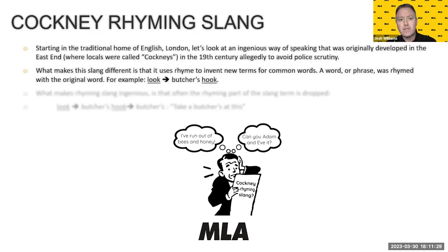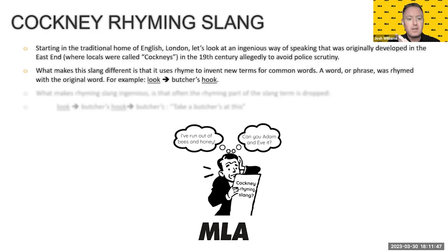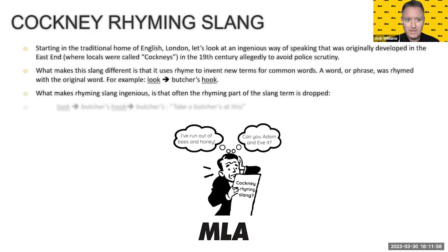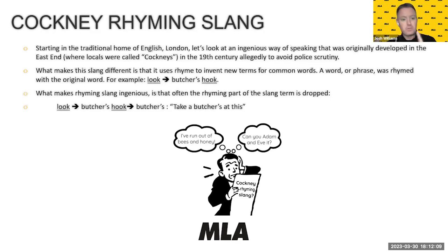For example, if you want to say 'look', they match that with 'butcher's hook' — which is the big hook that they hang the meat on in a butcher's shop. Therefore, 'look' becomes 'butcher's hook'. The ingenious thing about Cockney rhyming slang — the way they used it to avoid police scrutiny or even just as a bit of humour or as an in-joke — is that the rhyming part of the slang term is often dropped. So instead of saying 'butcher's hook', now you just say 'butcher's'. If you don't know that middle term, you're going to have no idea whatsoever. And that's still quite a common expression.